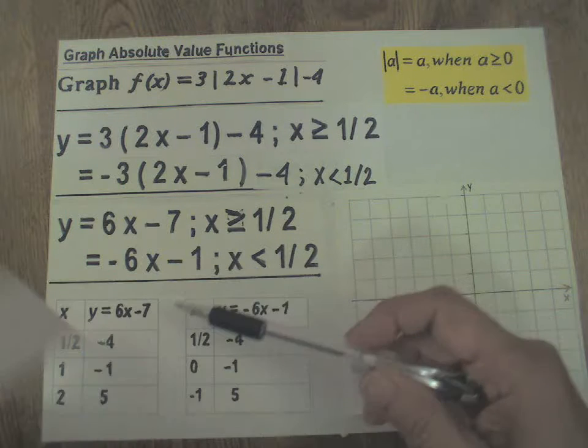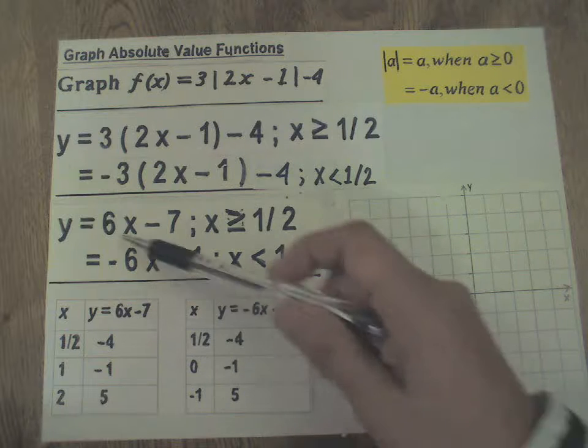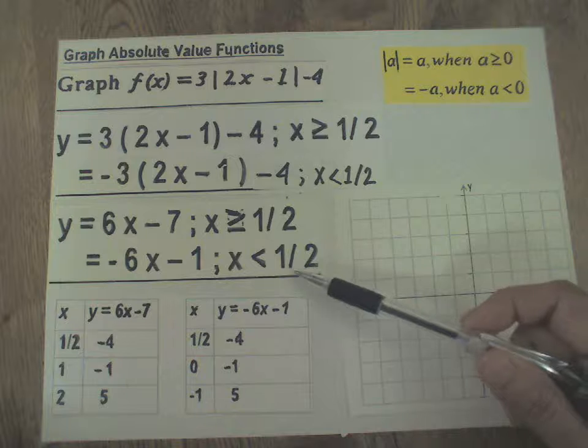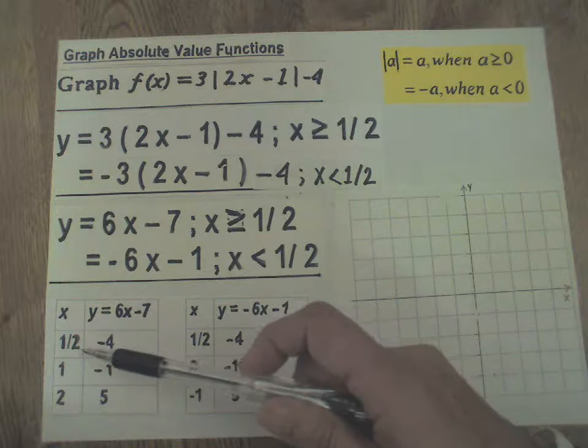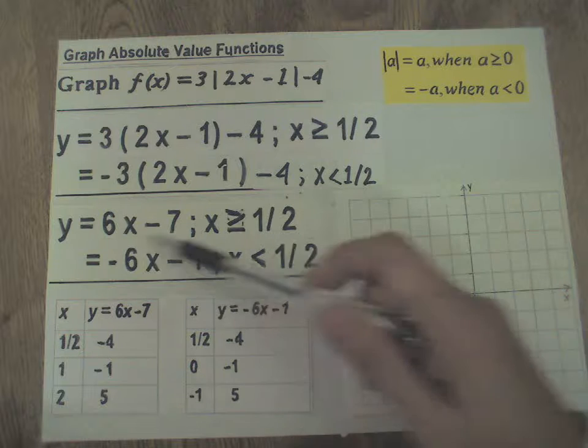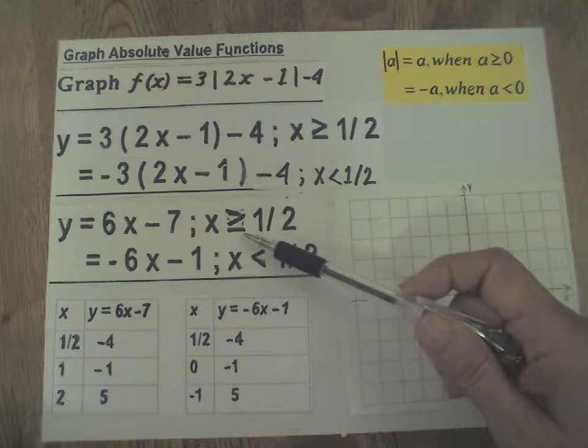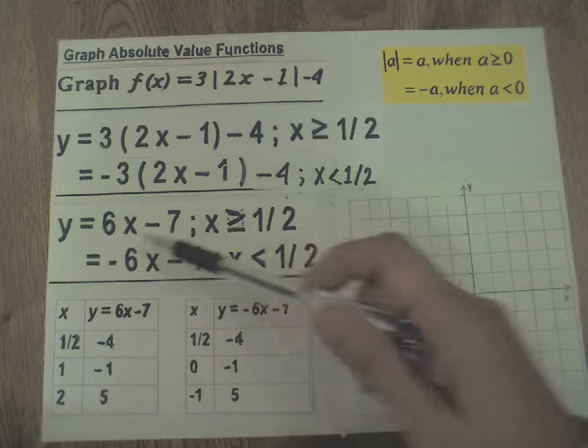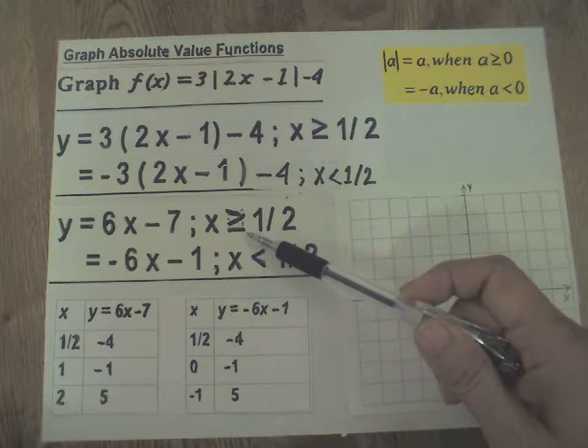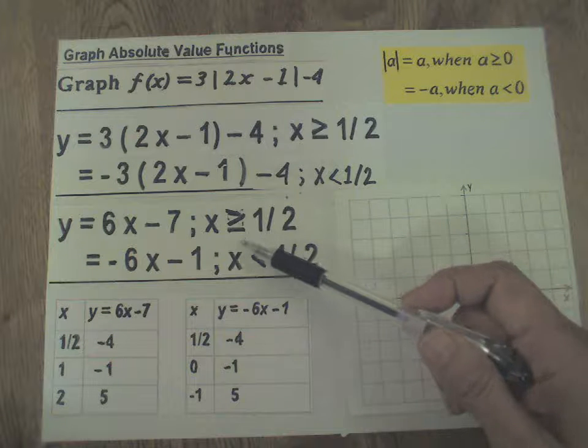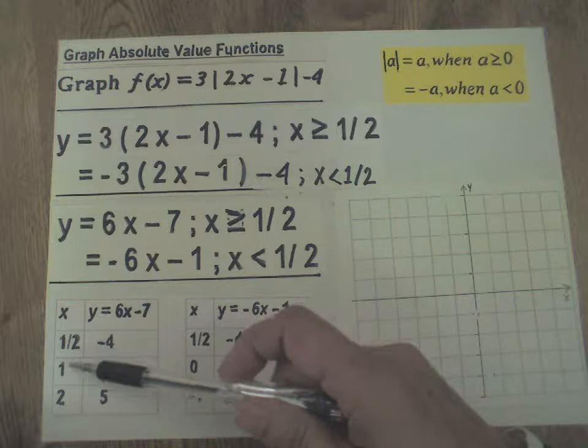So here are the two grids. This grid for this line, this grid for this line. This line will not work if x is less than 1/2. This is going to be true only when x is greater than or equal to 1/2. So give values to x that are larger than 1/2 or equal to 1/2, and these values work.